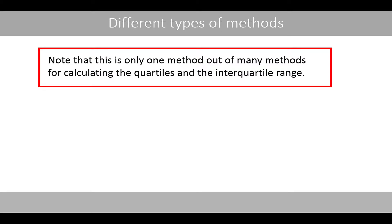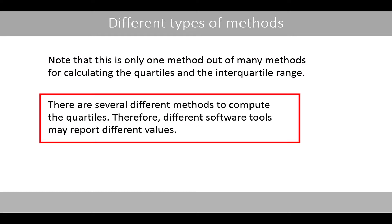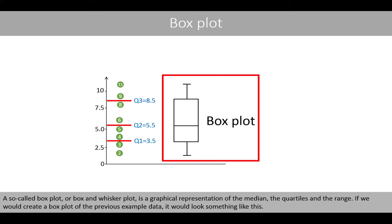Note that this is only one method out of many for calculating the quartiles and the interquartile range. There are several different methods to compute the quartiles, so different software tools may report different values. A so-called box plot, or box and whisker plot, is a graphical representation of the median, the quartiles, and the range.